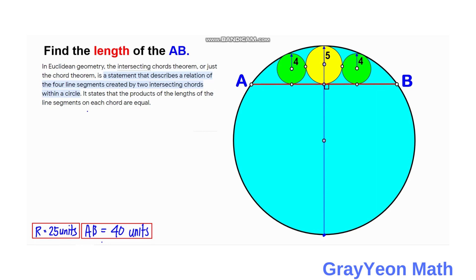Now that we know the radius, another way to find it is by the intersecting chord theorem. In Euclidean geometry, the intersecting chord theorem states that it describes a relation of the four line segments created by two intersecting chords within a circle. It states that the products of the lengths of the line segments on each chord are equal.